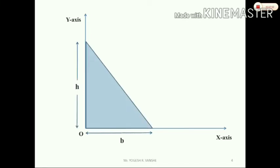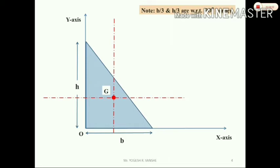The triangle's dimensions are b and h. The left side is vertical. You have to look at the axis of symmetry — the centroid point. Then look at the perpendicular lines. Note: b by 3 and h by 3 distances are with respect to the 90-degree corner. The perpendicular line drawn from the right-angle corner gives 90 degrees. The triangle has just one angle of 90 degrees. The b by 3 distance gives the perpendicular line crossing through the triangle center.